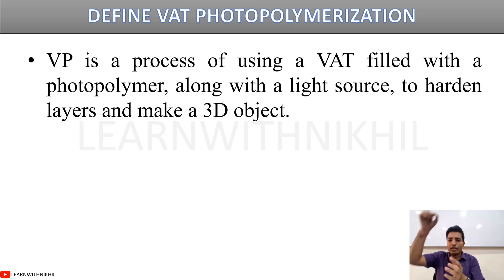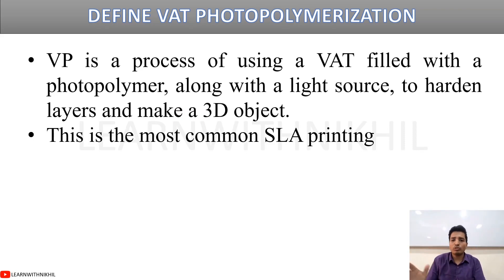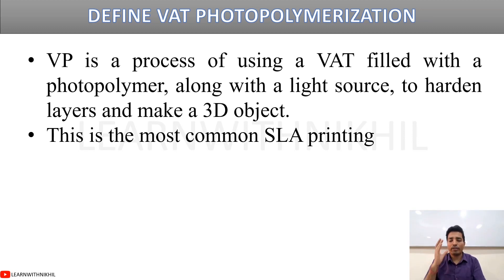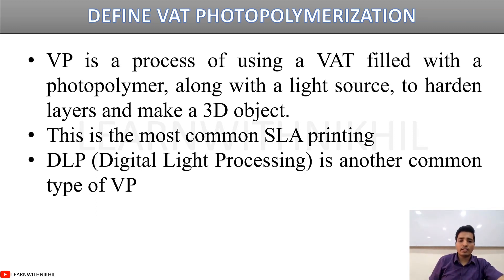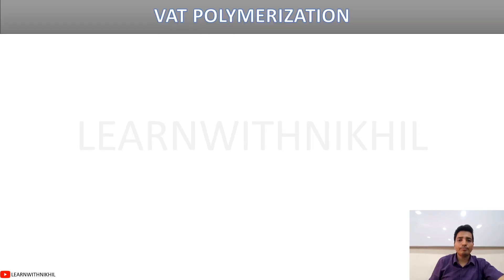Vat photopolymerization is a process using a vat filled with a photopolymer or resin along with a light source that hardens each layer to build the 3D object. The most common form is SLA — stereolithography — printing. Objects printed this way are very accurate and high quality, but they require post-processing and a confined space. DLP (digital light processing) is another type of vat photopolymerization.